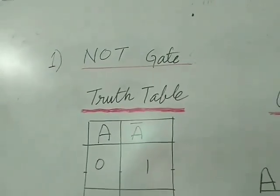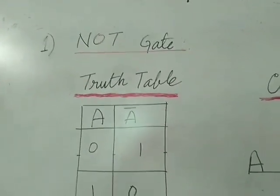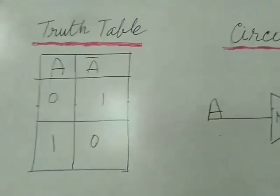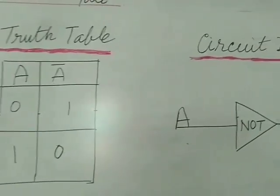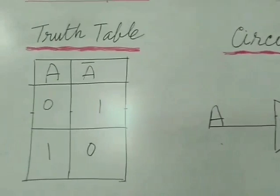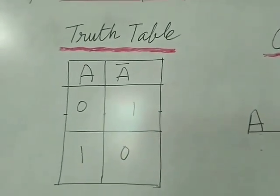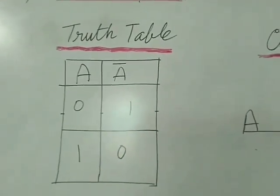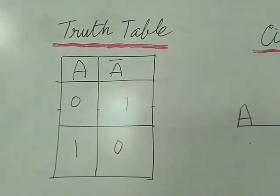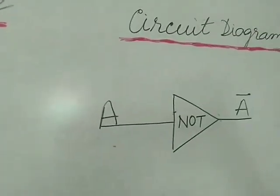The NOT gate — the truth table and circuit diagram are as shown here. If the input is 0, the output is 1. If the input is 1, the output is 0. The output is always opposite to the input.